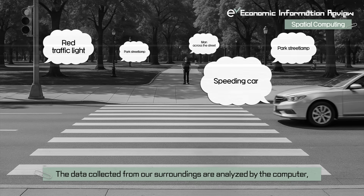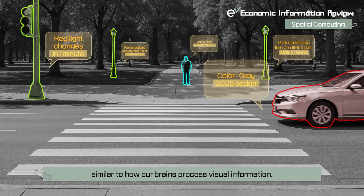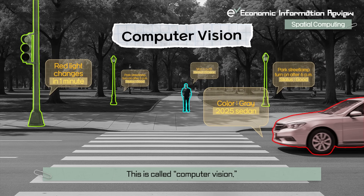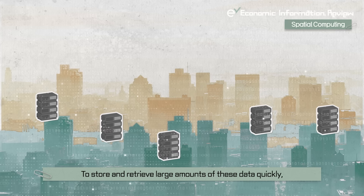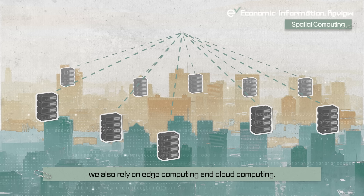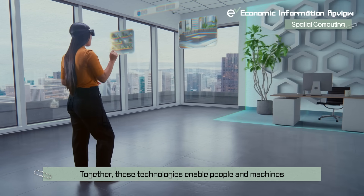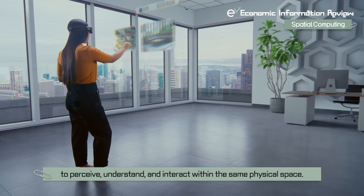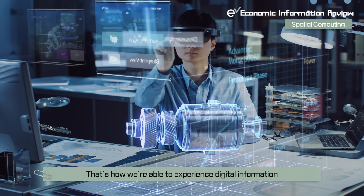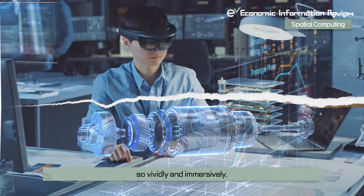The data collected from our surroundings are analyzed by the computer, similar to how our brains process visual information. This is called computer vision. To store and retrieve large amounts of these data quickly, we also rely on edge computing and cloud computing. Together, these technologies enable people and machines to perceive, understand, and interact within the same physical space. That's how we're able to experience digital information so vividly and immersively.